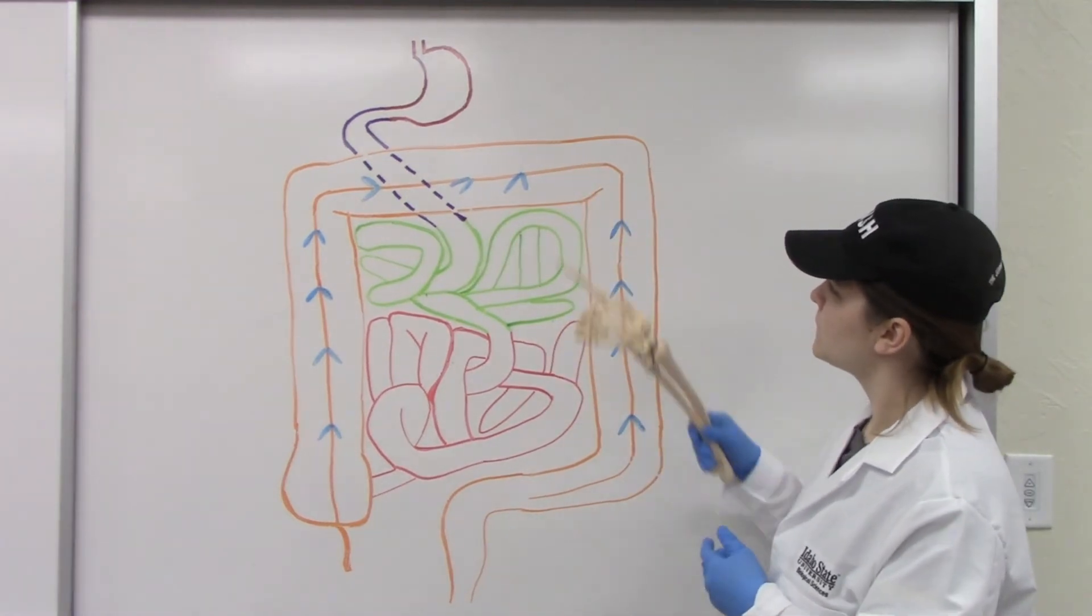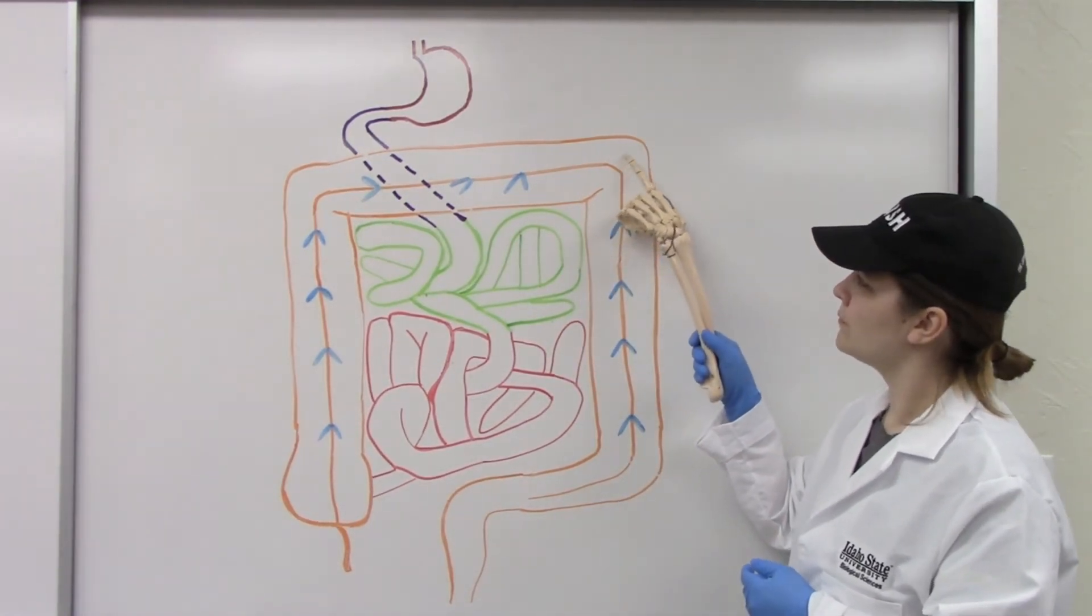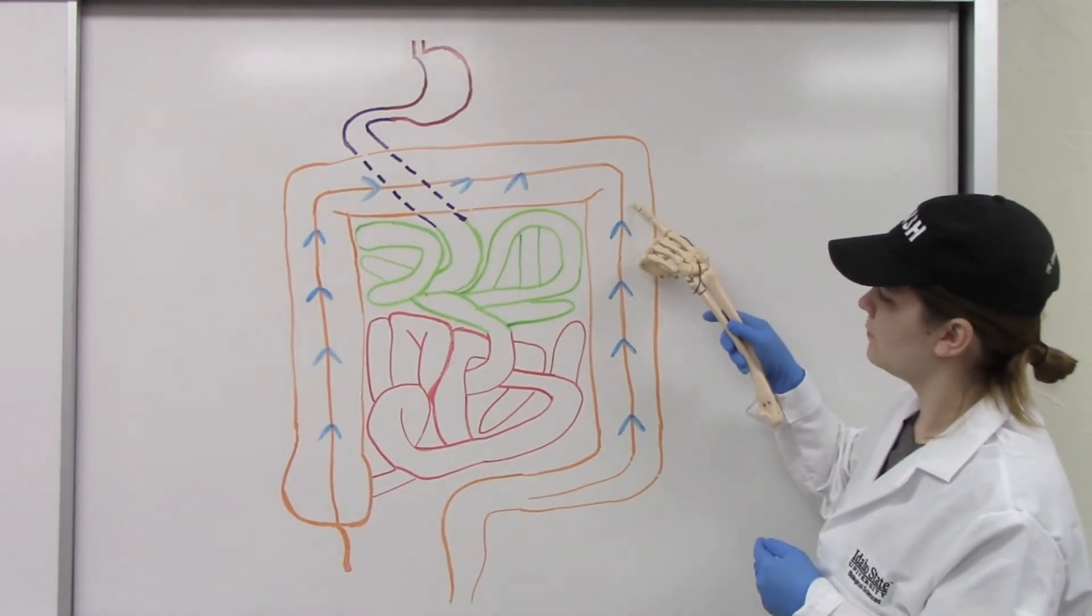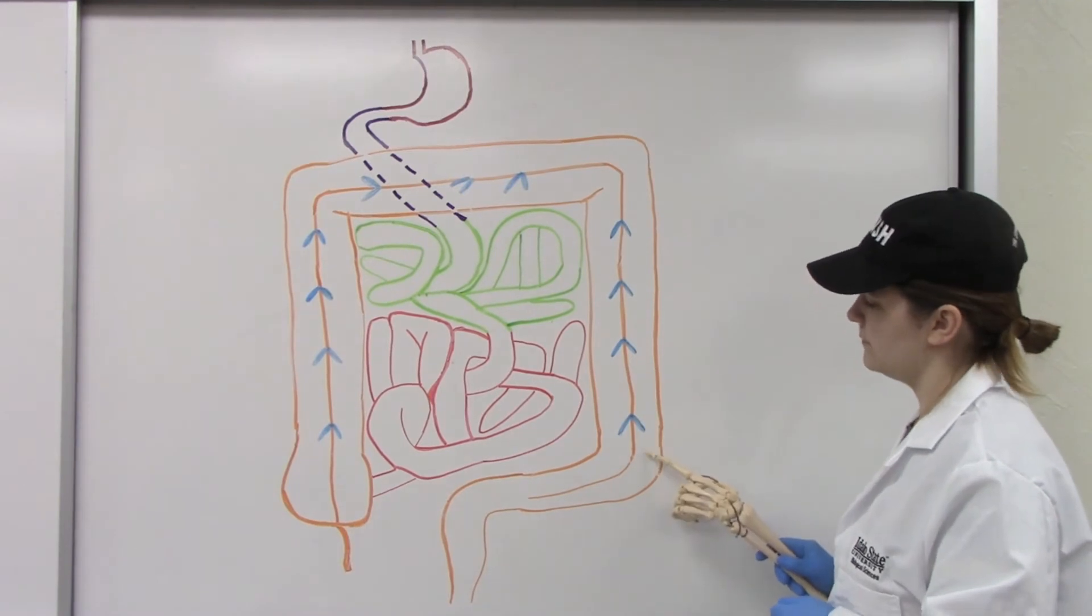We turn here at the spleen, called the splenic flexure, or the left colic flexure. The next segment that travels from superior to inferior is the descending colon.